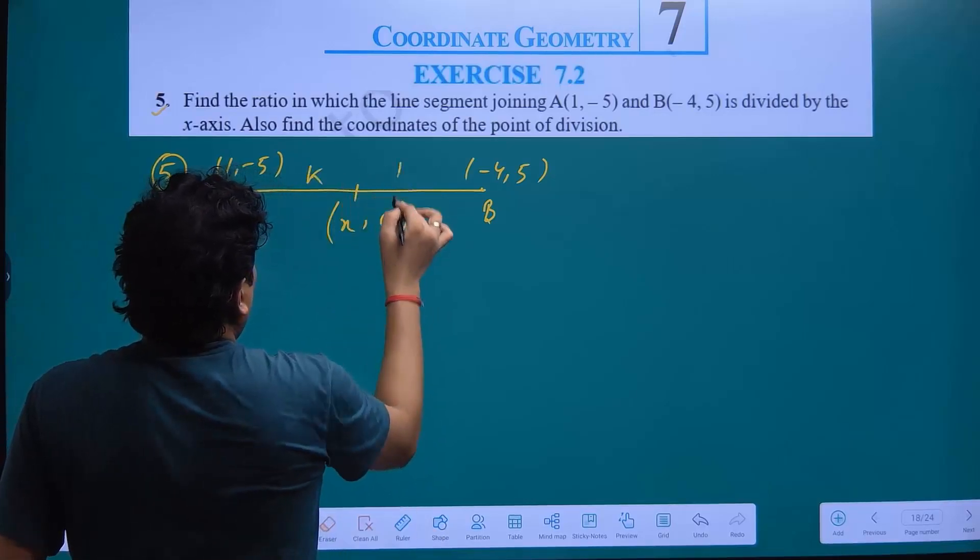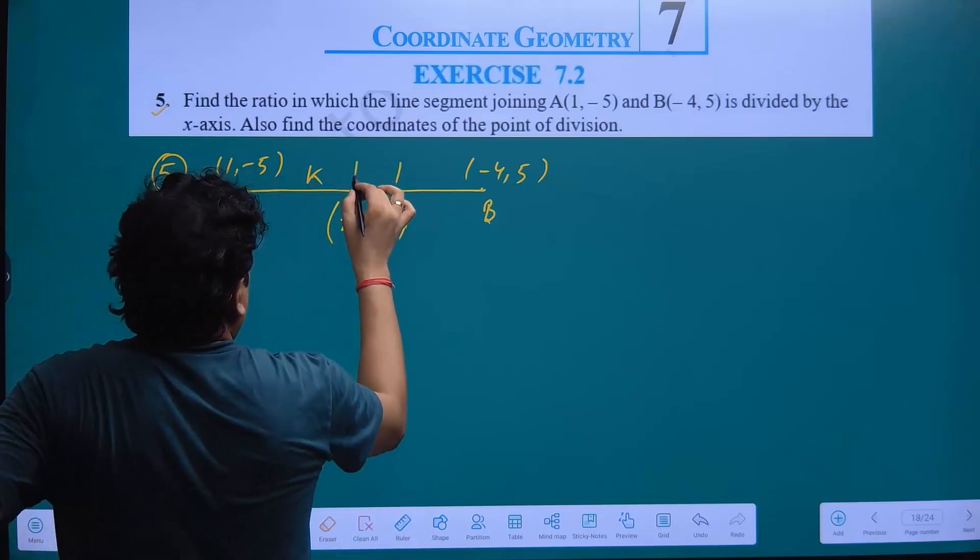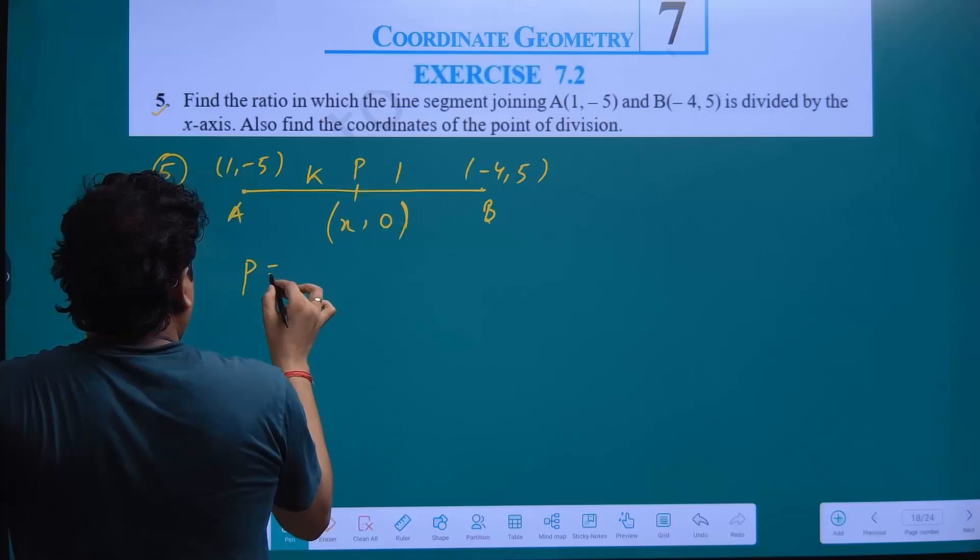We can do that in K to 1 ratio. The x-axis is divided, so point is P. So P coordinate is what we can find.